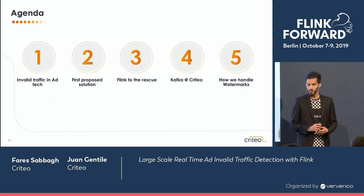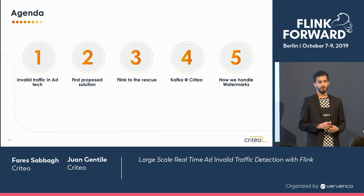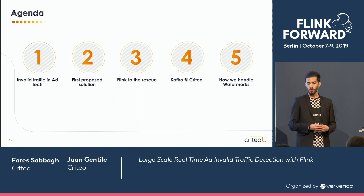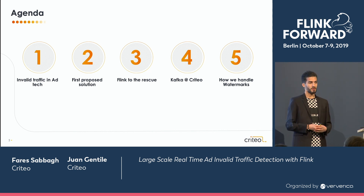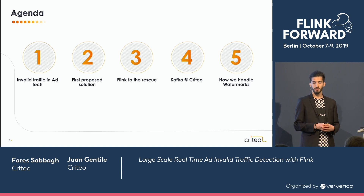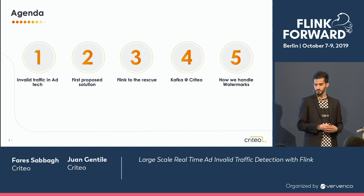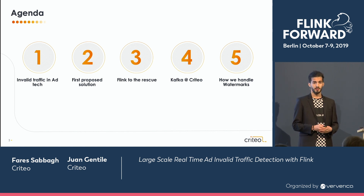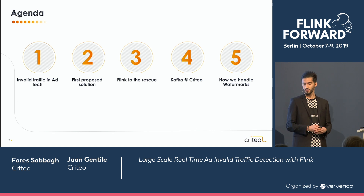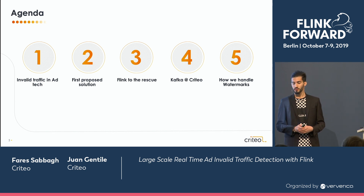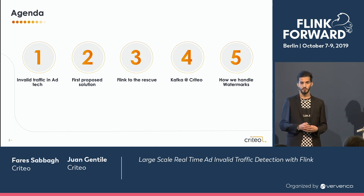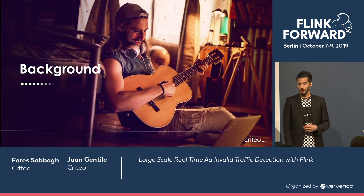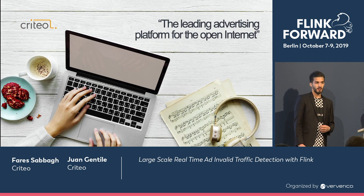Through this session, we'll first talk about invalid traffic in the ad tech industry in general — what are the fraud schemas, how people are making money with it. We'll then see what is the first solution that we put in place to defeat the fraudsters, then how Flink resolved most of our issues, and we'll finish with a tour of the Kafka usage and how we handle watermarks at Criteo. But first, a small background of Criteo.